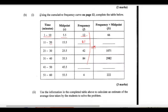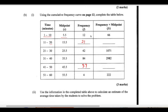At the 50-minute mark that is 196 cumulative frequency. Adding up all the frequencies: 12 plus 21 plus 42 plus 84 plus 37 plus 4 gives exactly 200. Since we got exactly 200, we can leave those numbers as they are.